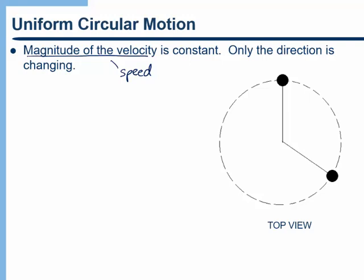To think of a simple example, imagine tying a rock to the end of a string and swinging the string in a horizontal circle above your head. Here's a top view. If this object is going clockwise, when the object is at this point in the circle, its velocity would be in this direction — call that V1. At some later time, the object has moved along the circle and the velocity is now in this direction, which we'll call V2. The magnitude of V1 and V2 is the same, but the direction is clearly changing.